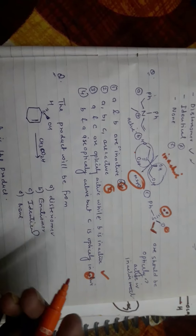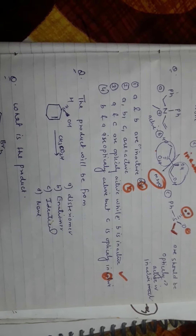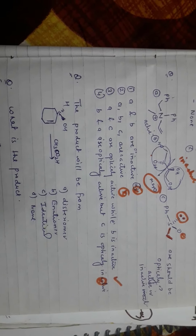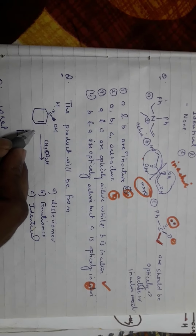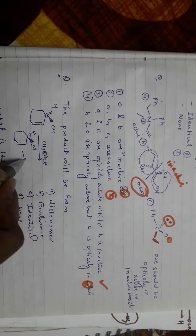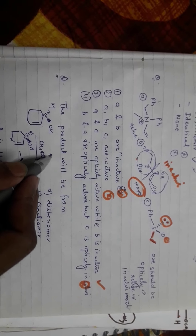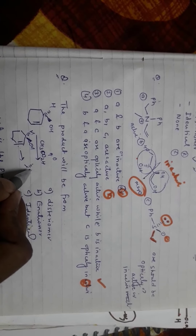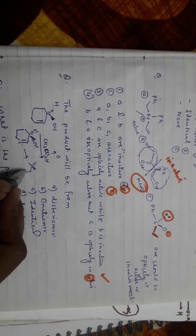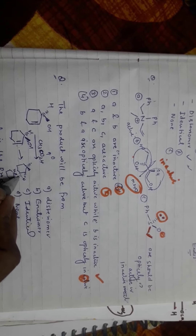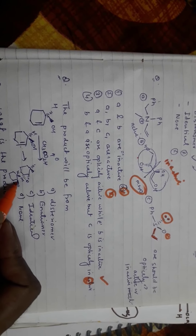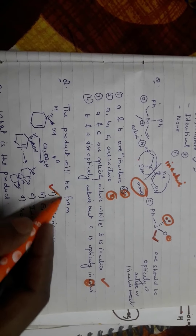This is a simple problem but can be asked in exams. For the next question, we determine the exact product of this molecule. There are two probabilities: either this or that. The double bond involves a peroxide, so oxygen should be inserted between the carbons. These products are superimposable but non-mirror images, so they should be diastereomers. These are the incorrect answer choices.